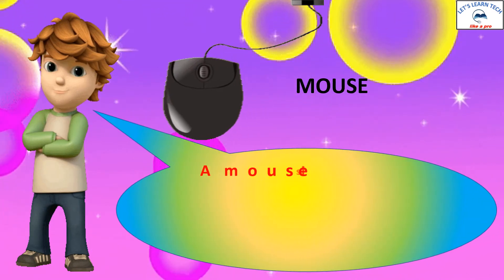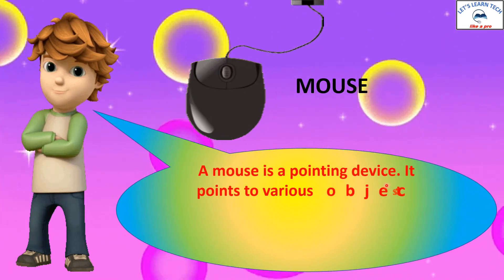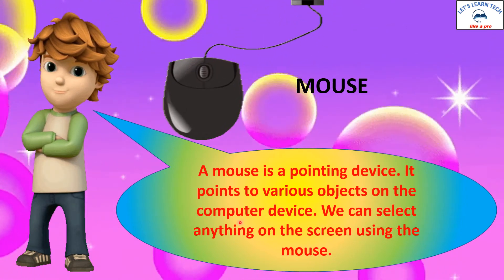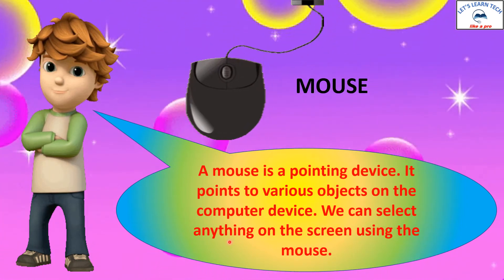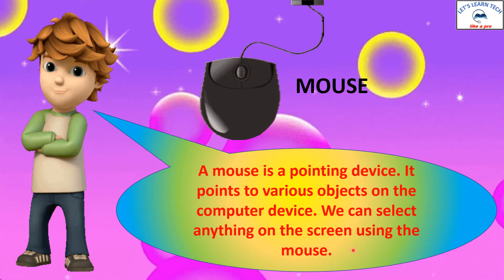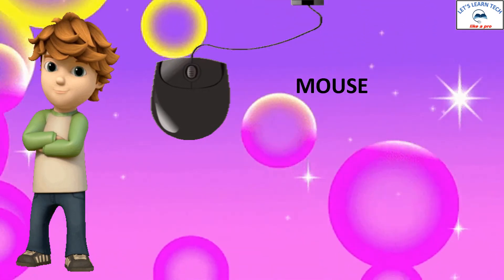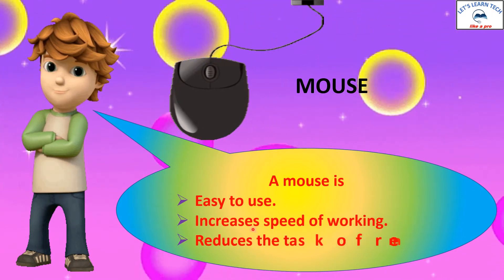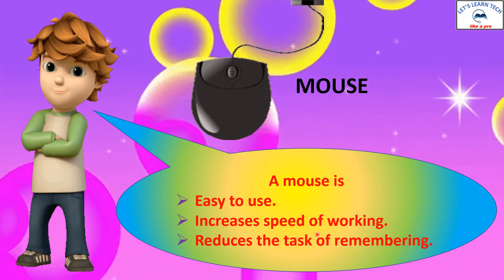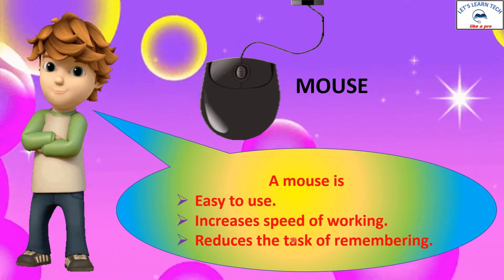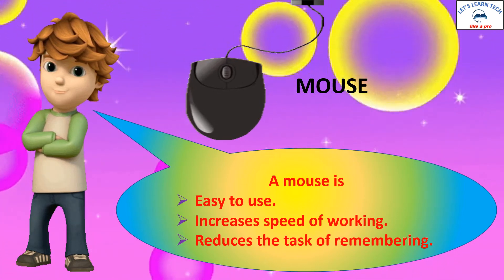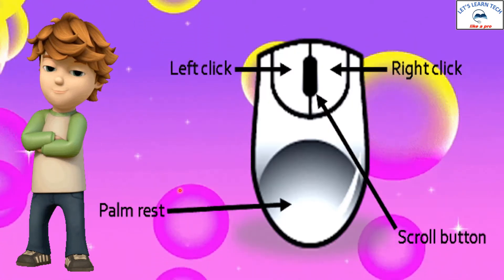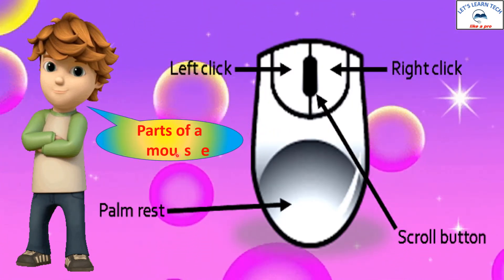A mouse is a pointing device. It points to various objects on the computer. We can select things on the screen using the mouse. A mouse is easy to use and it increases the speed of working and it also reduces the task of remembering the commands. You have different parts of a mouse.